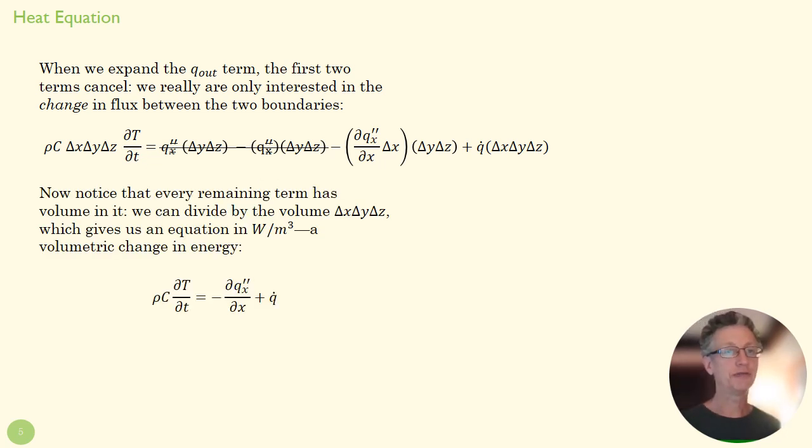We simplify our terms even further. Beyond crossing these out, we might notice every term now has a ΔxΔyΔz—that's our volume. We're going to divide out by our volume here, and when we do that we end up with this equation down here.